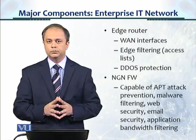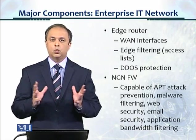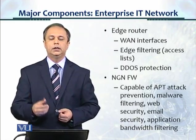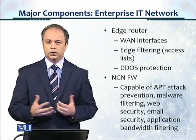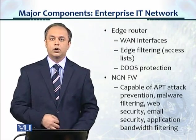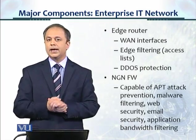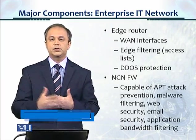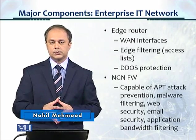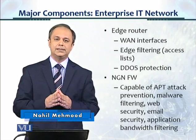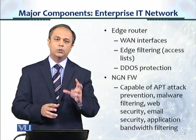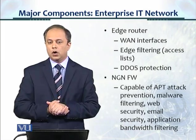The edge router — what does it do? It has wide area network interfaces. It may be MPLS, it may be internet, or it may be any other type of technology used on the wide area network. For example, there could be fiber optic interfaces. It does edge filtering because it's the first device connecting to the outside world, and it would have access lists. There are some RFCs which specify how security should be implemented on an edge device.